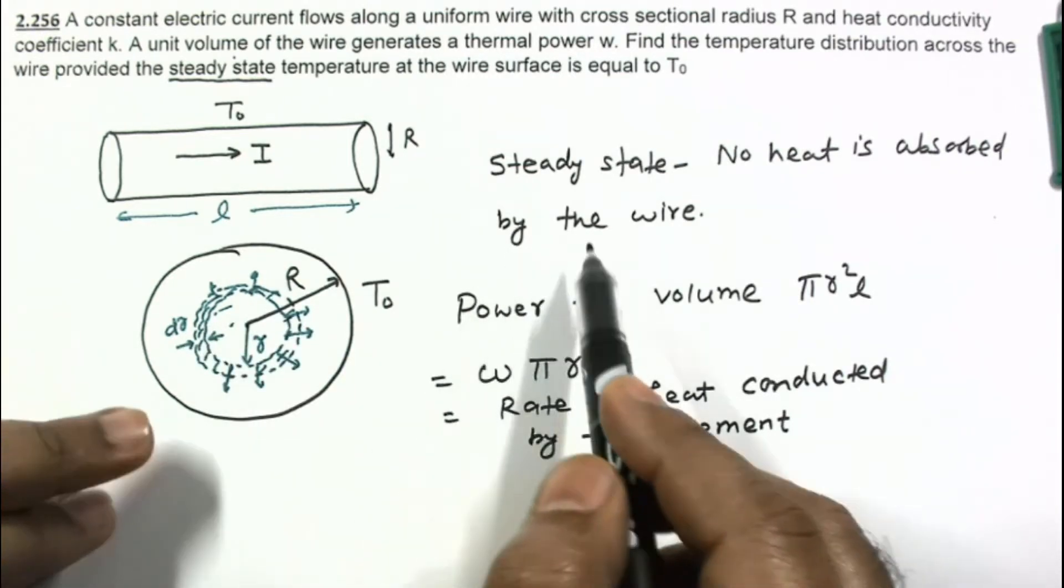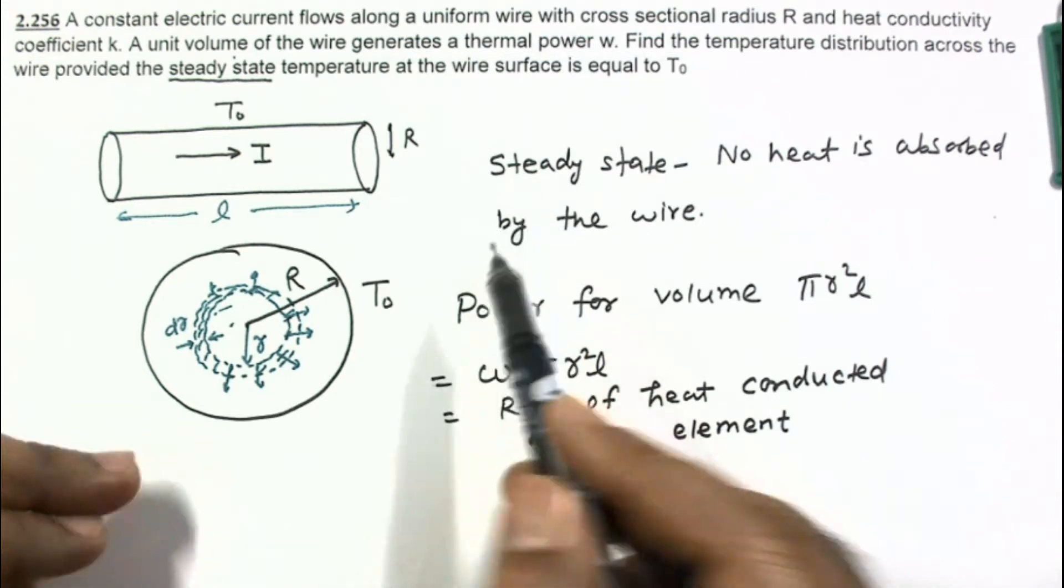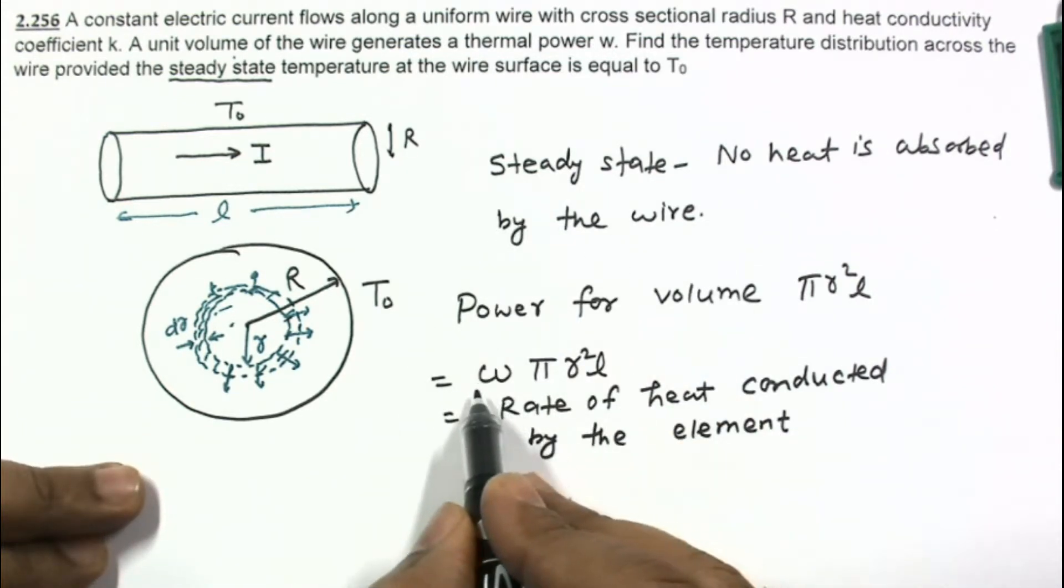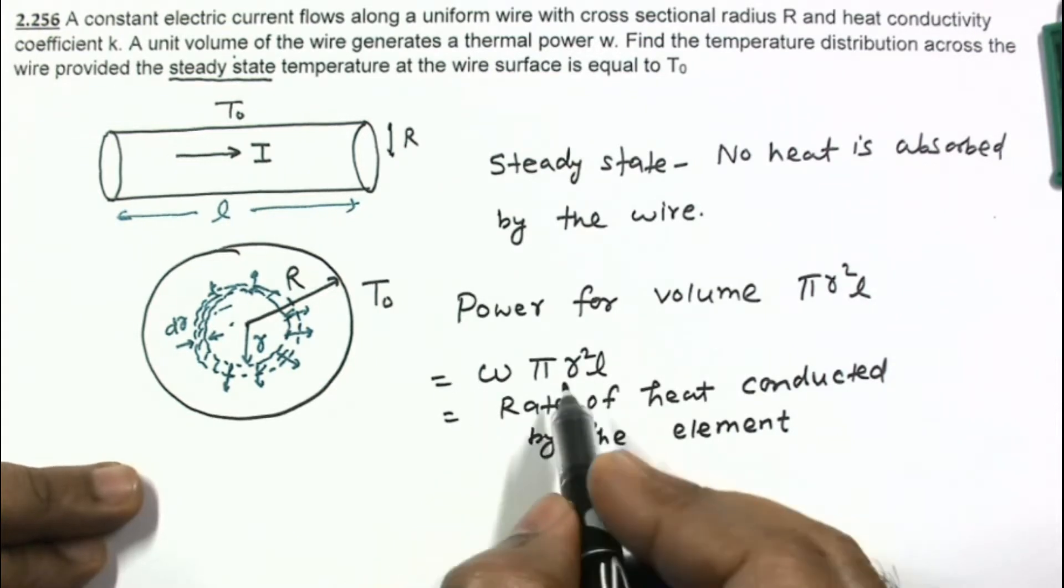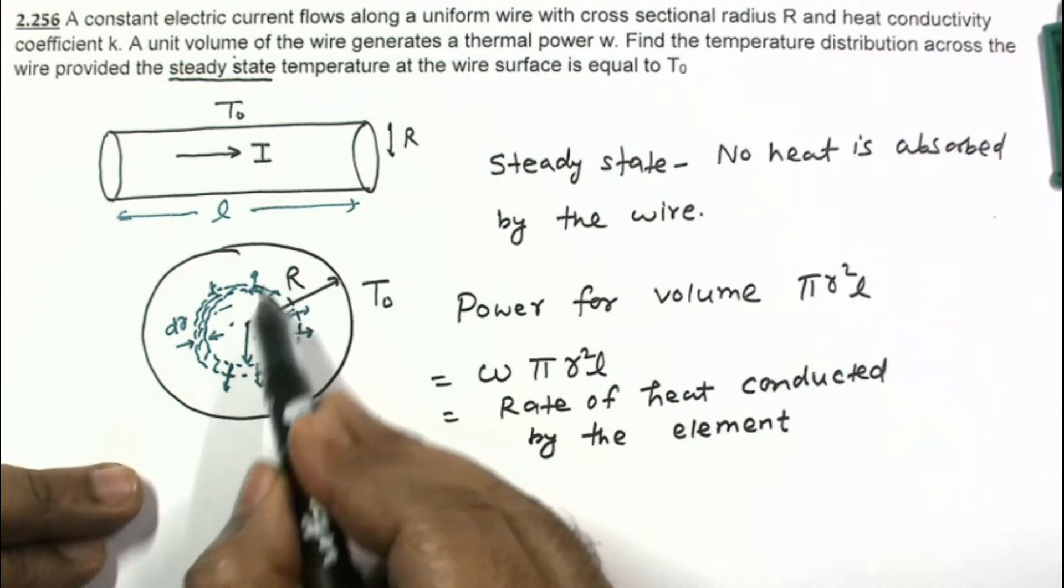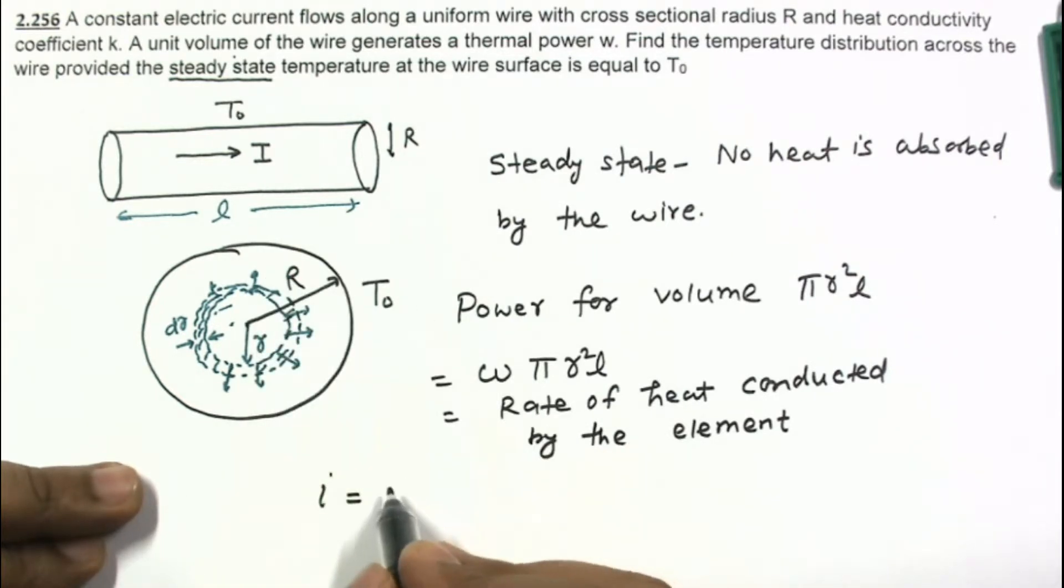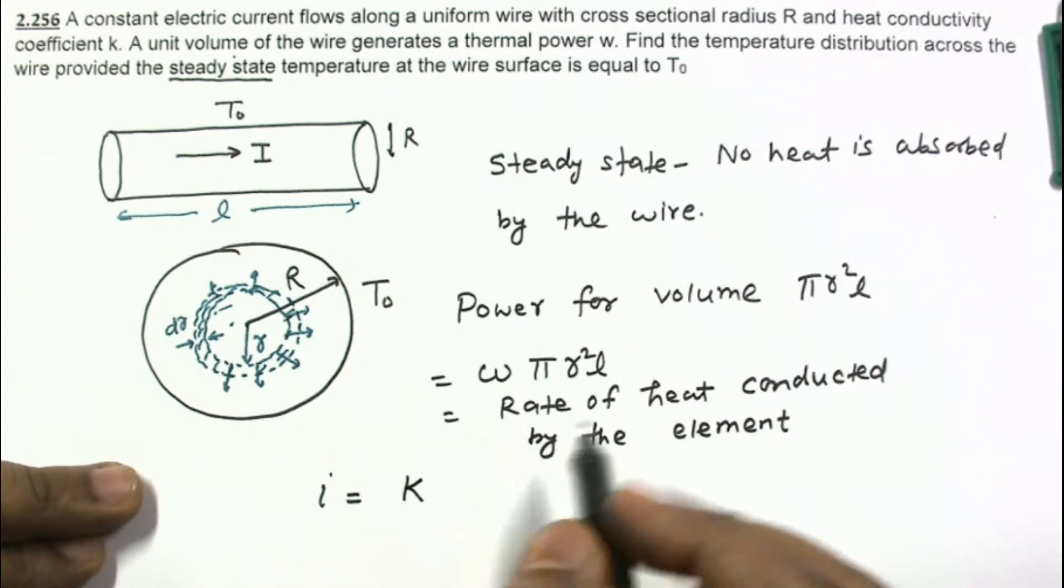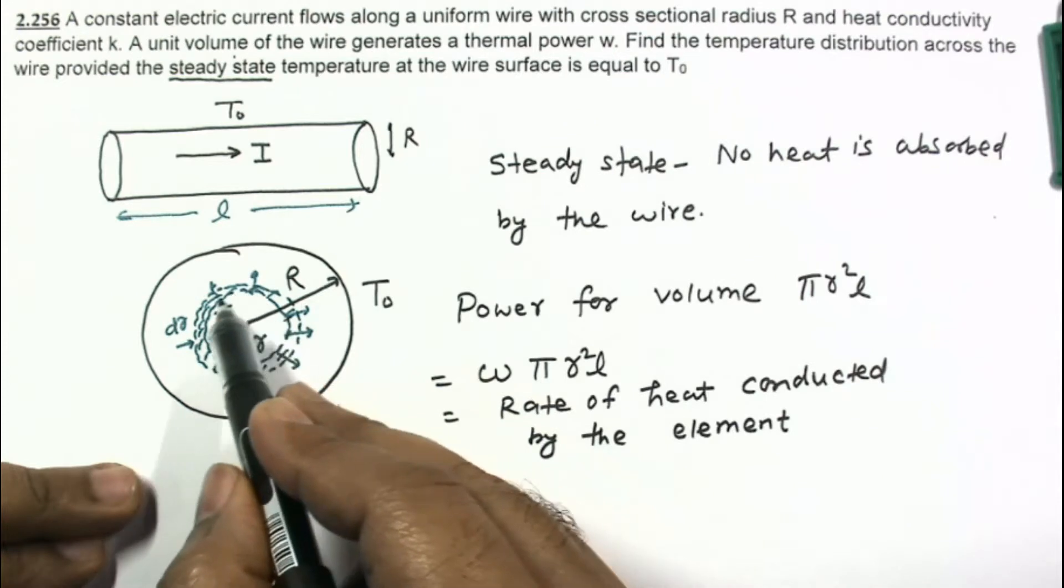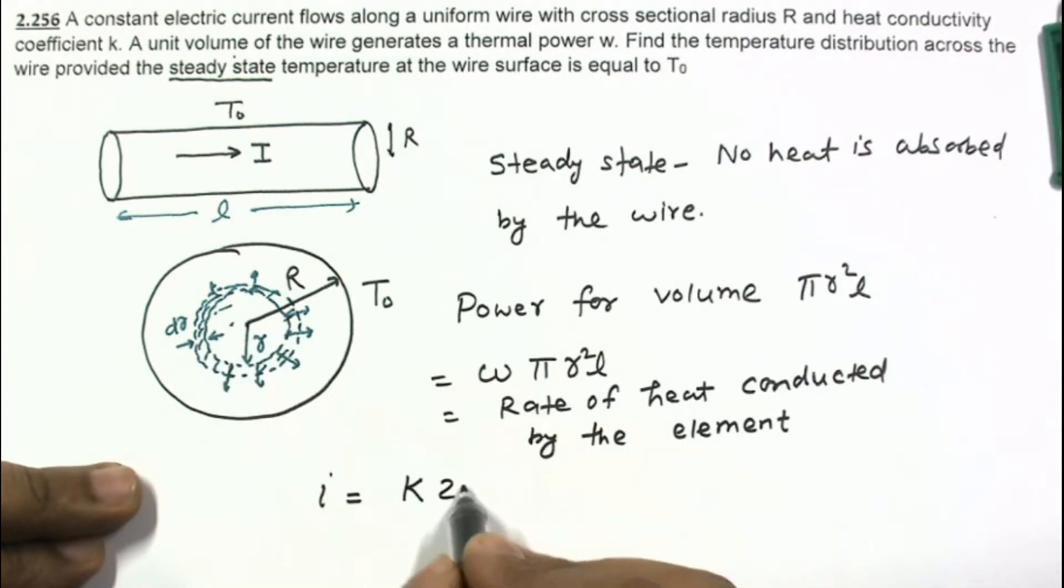Whatever heat is generated in this volume πr²L must be conducted through this element. Otherwise, if there is some absorption, then temperature will not remain constant. And this is also equal to I, the heat current which is being conducted through this element. And I is given by formula: thermal conductivity coefficient K multiplied by area 2πrL multiplied by temperature gradient dT/dr.